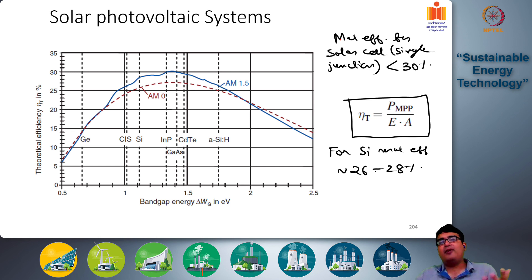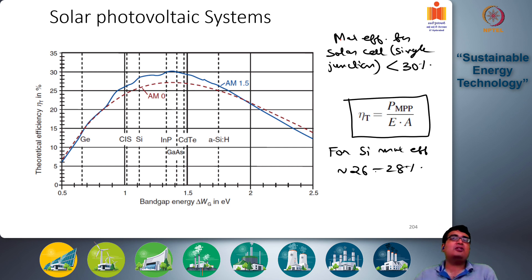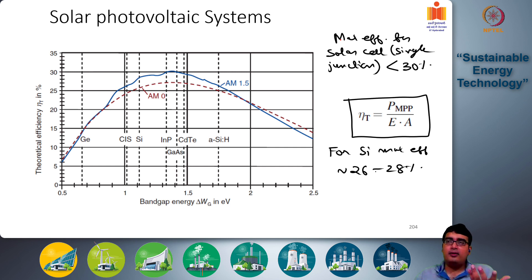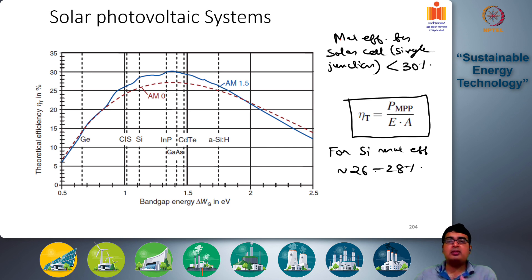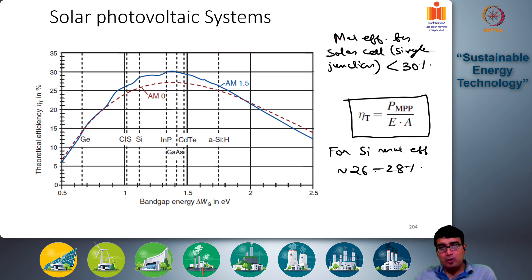It would not be economical at 5 to 10 percent efficiencies, but at 18 to 20 percent efficiencies we get good value for power. As you can see, the levelized cost of electricity of solar cells is sometimes even lower than fossil fuel resources.